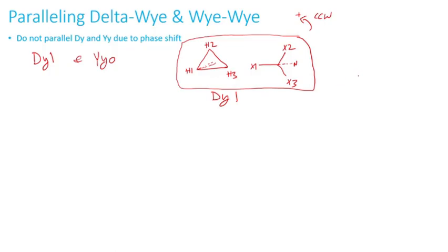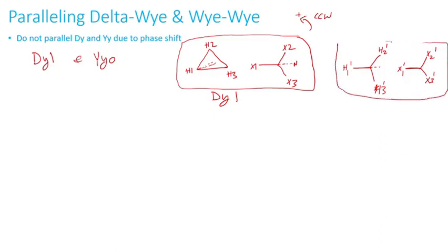Now I'm going to draw the yy0 transformer. I'll draw the high side windings calling them H1 prime, H2 prime, H3 prime to signify a separate transformer. Since there is no phase shift, these will be in parallel, so X1 prime, X2 prime, and X3 prime align directly. This is the second transformer: the high side is Y, the low side is Y, and there is no phase shift.